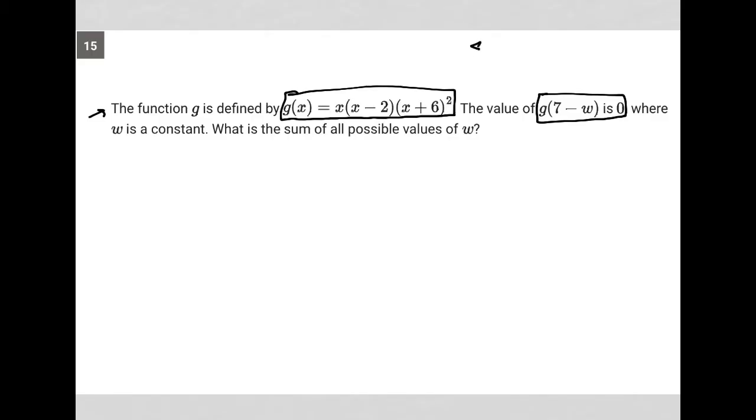I'm going to treat this like a traditional function question. Traditionally, whenever we have a function question, we're provided with a function—we have g(x) here—and then a question that replaces x in our original function with something else. In this case, that something else is 7 minus w.